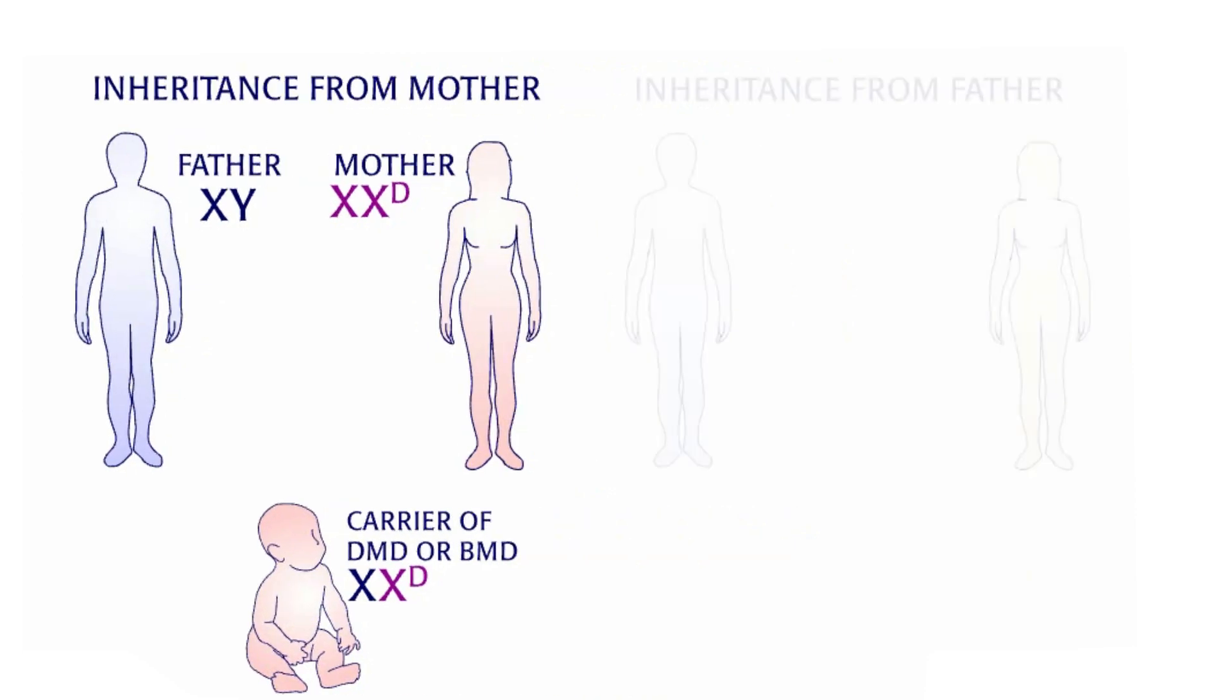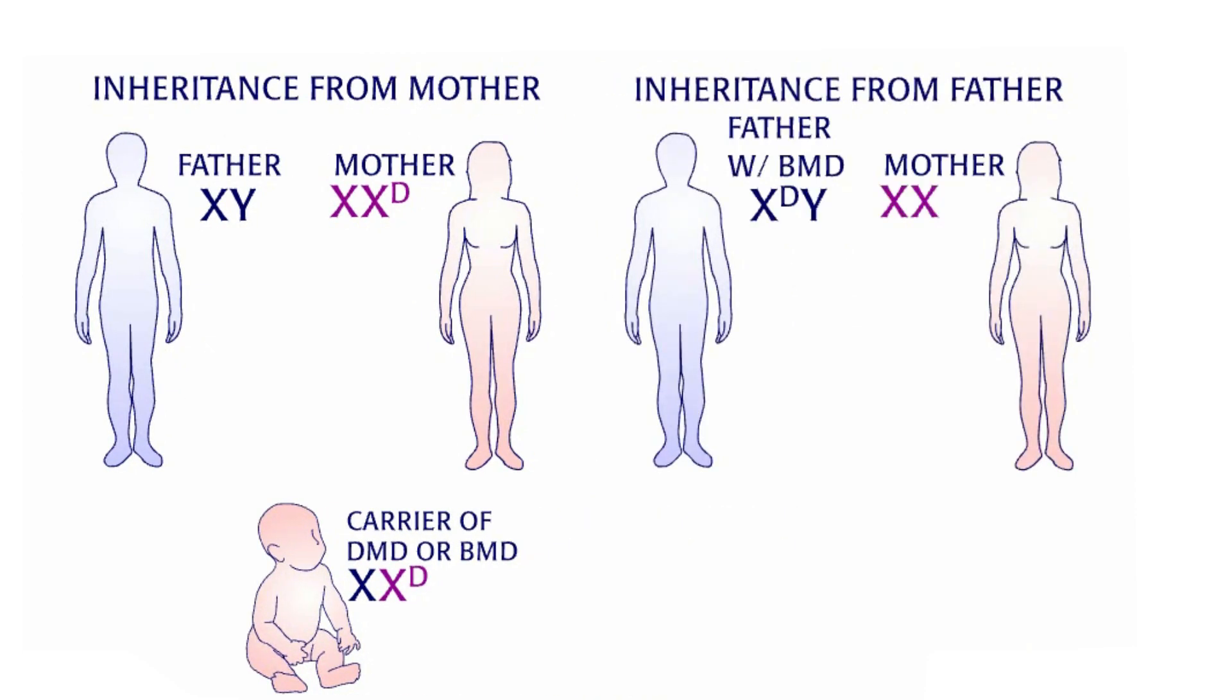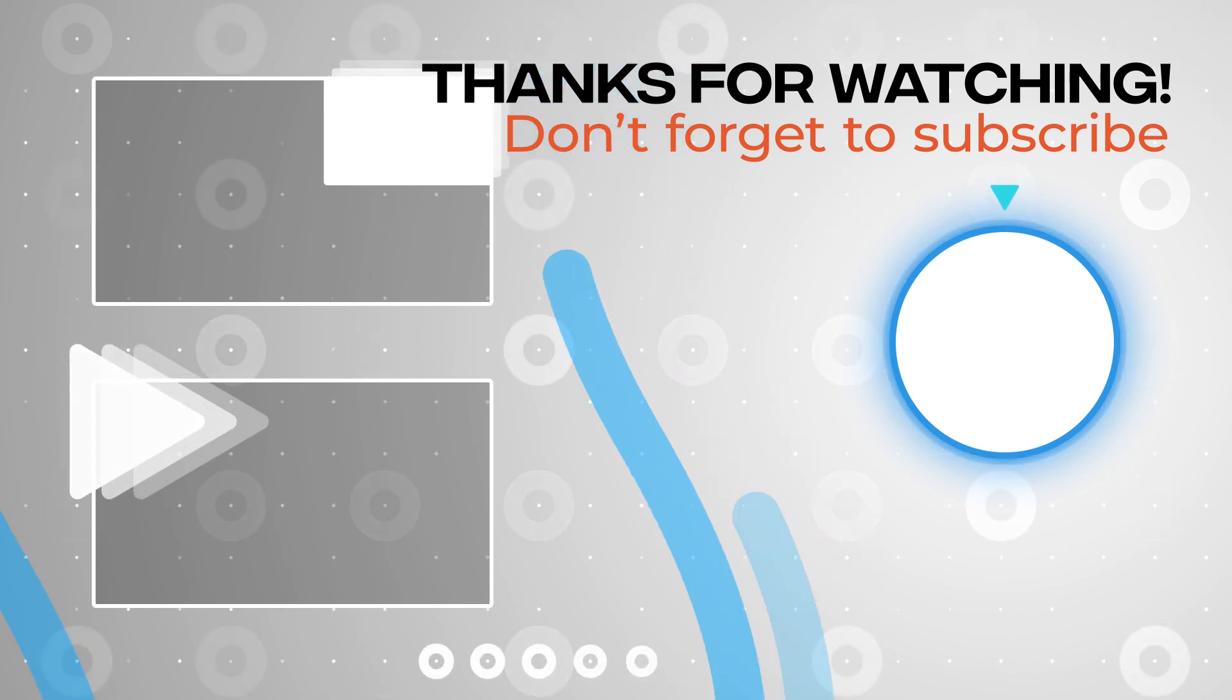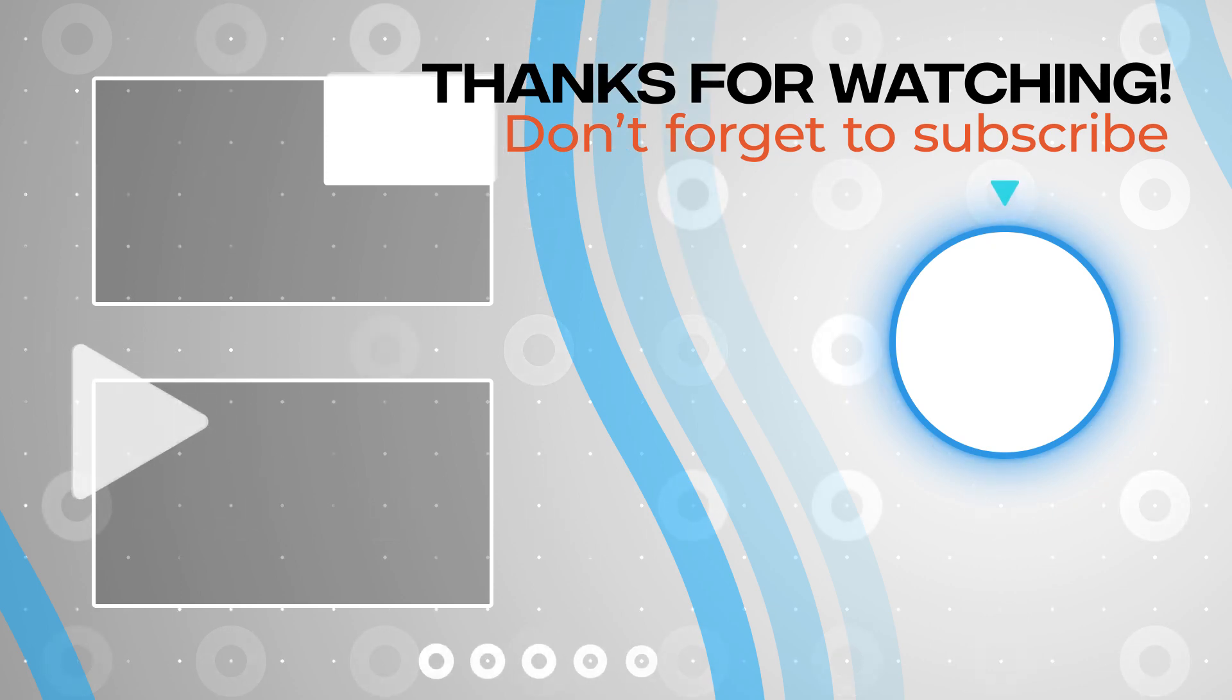Carriers of Becker muscular dystrophy can be produced when a female inherits a mutated gene from her mother, or when a female inherits a mutated dystrophin gene from a father with Becker, or when a female inherits a mutated dystrophin gene from her mother.